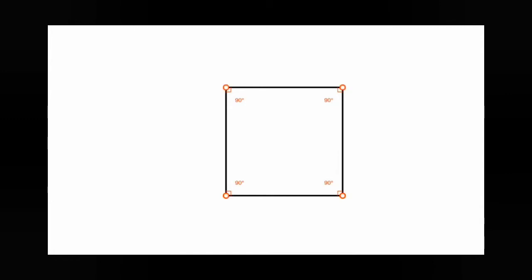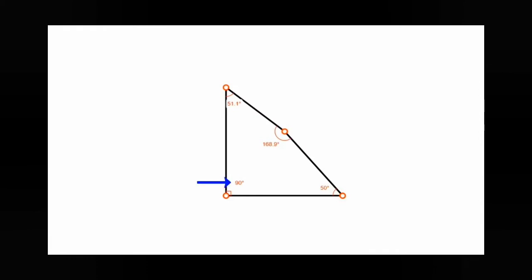The next important topic is changing shapes. A square has 4 right angles — each angle is 90 degrees. These 4 dots represent the vertices of the square. If we apply pressure on any one of the vertices, does it change the angle of the square? Yes — if we apply pressure on one vertex, all angles except the one being held change; the angles decrease.